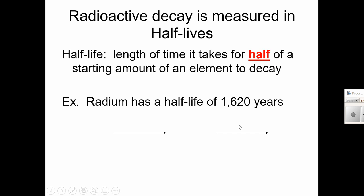So you might have heard about half-life before. The length of time it takes for half of a starting amount of an element to decay. So for example, radium has a half-life of 1,620 years. So if you've got 100 radium atoms, after 1,620 years, only 50 of them remain. The rest have decayed, just like the chain we saw, into something else, probably going towards stability. After another 1,620 years, only 25 remain.